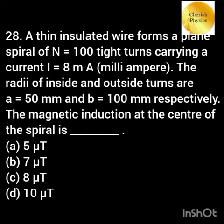A thin insulated wire forms a spiral of 100 turns and carries a current of 8 milliampere. The radii of the inside and outside turns are 50 mm and 100 mm. The magnetic induction at the center of the spiral is?